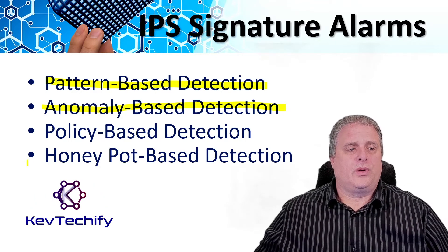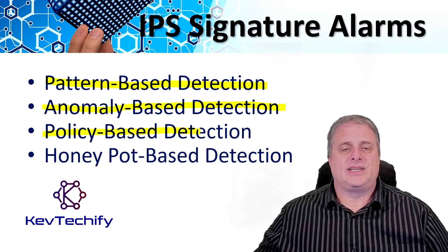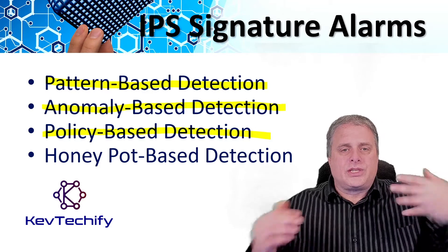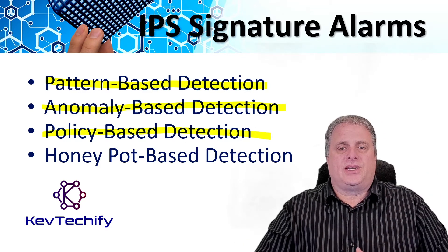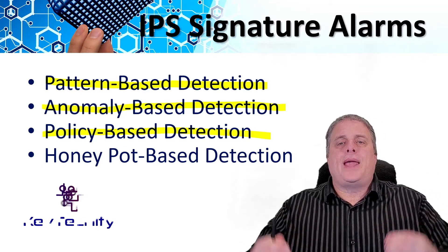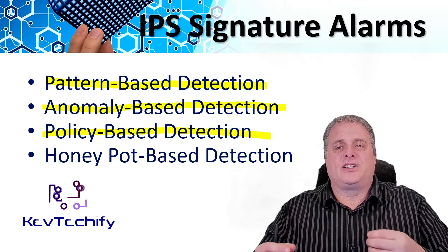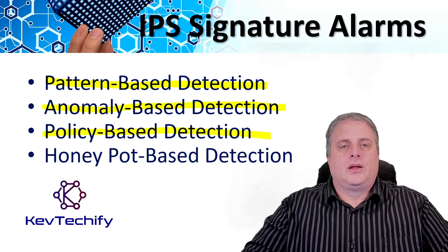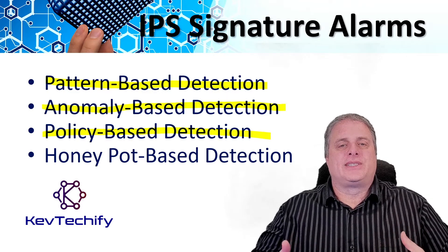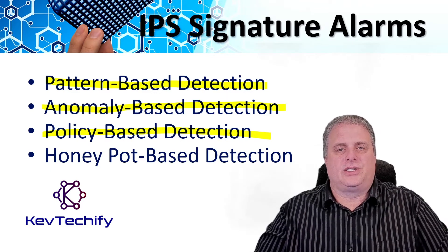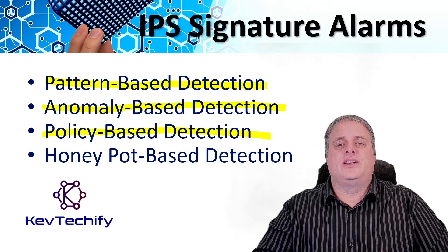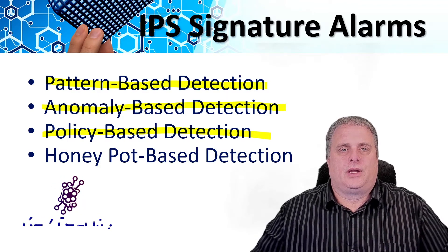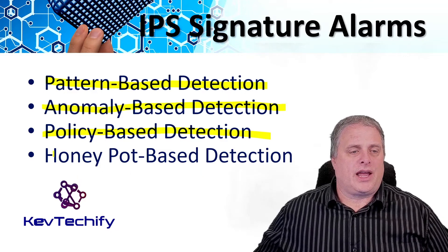The third is policy-based detection, also known as behavior-based detection. Although similar to pattern-based detection, an administrator manually defines behaviors that are suspicious based on historical analysis. The use of behaviors enables a single signature to cover an entire class of activities without having to specify each individual situation.